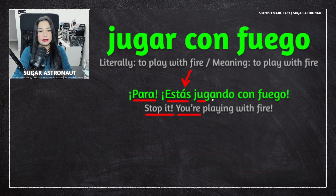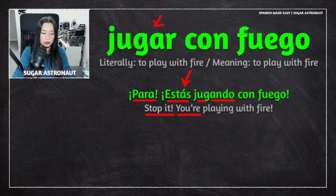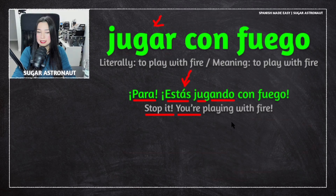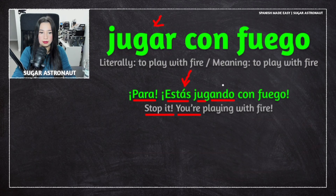Jugando. We have the verb jugar, which means to play. Yo juego, tú juegas, nosotros jugamos, ellos juegan. This is an irregular verb, so it has its own conjugation with some irregularities. We have to pay attention to this verb. Jugando.